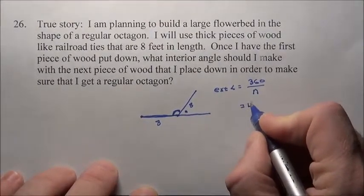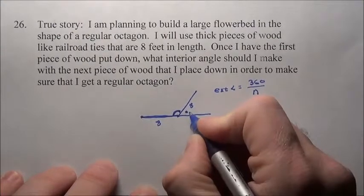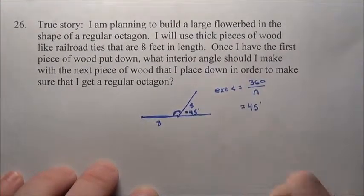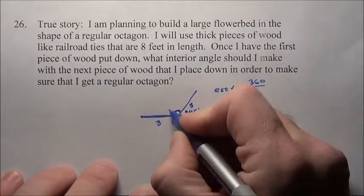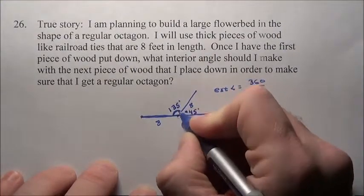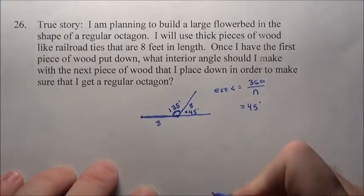360 divided by 8 is 45 degrees. This outside angle will be 45 degrees. If the outside is 45 and these are a linear pair, I know I'm going to lay the beam down at 135 degrees.